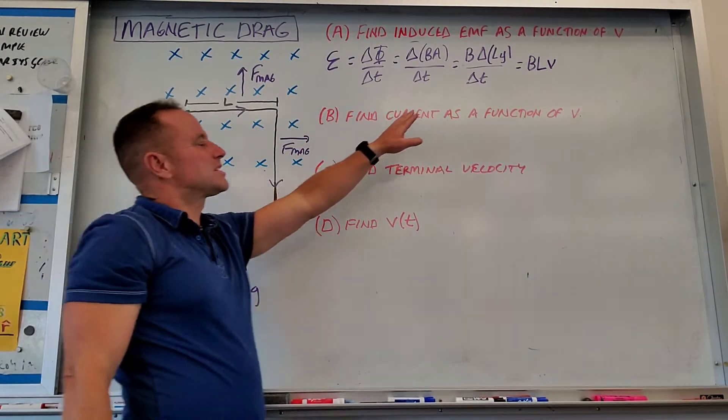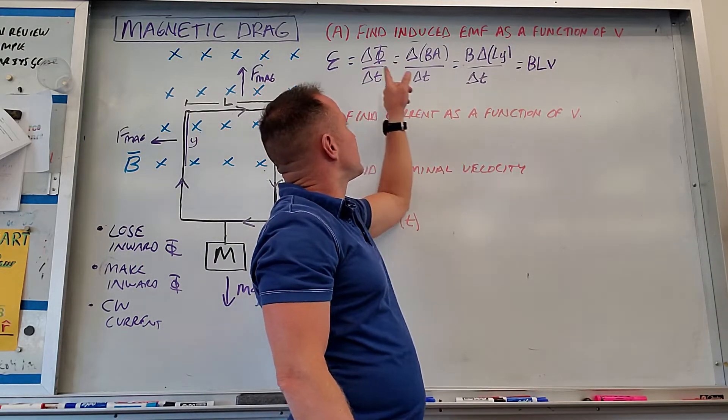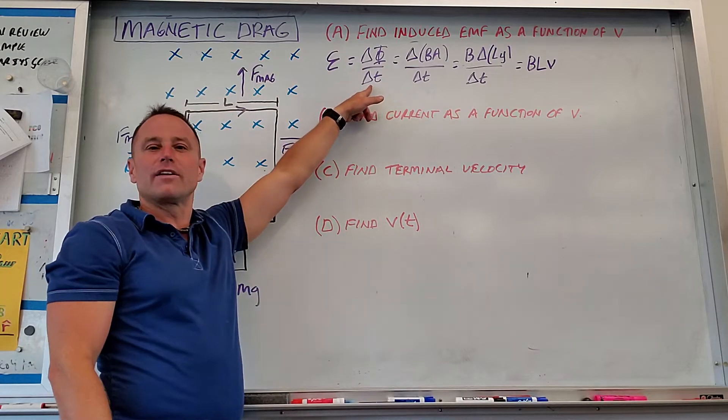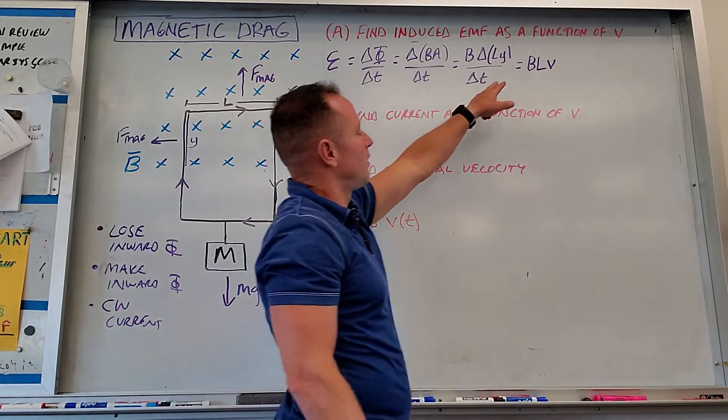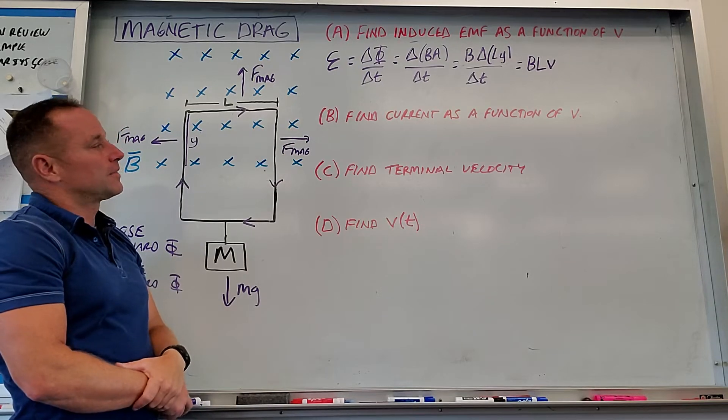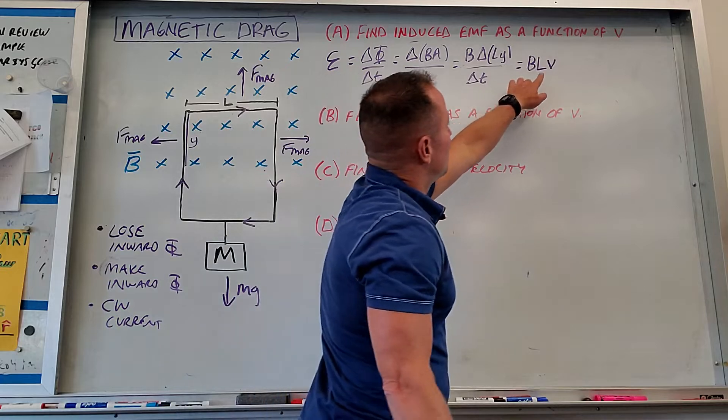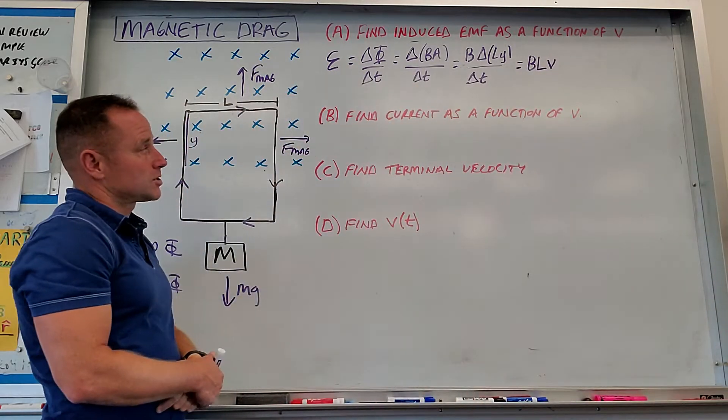In physics 2, this is actually a little derived result that sits in the form of the sheet. In physics C, it does not, because the idea is you're expected to be able to get there from something like this. But if you happen to know this, you're able to use it in a situation like this. So the induced voltage goes like how fast you are going. It's directly proportional.